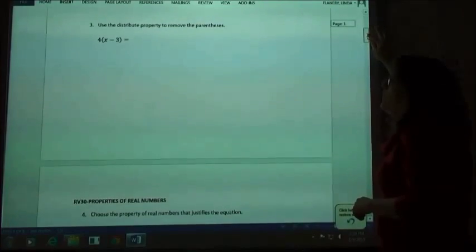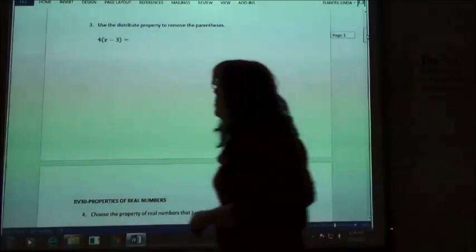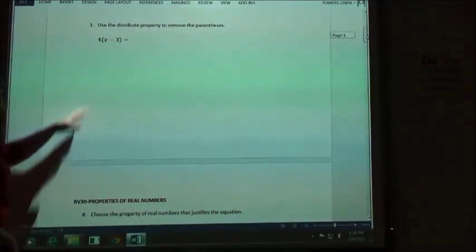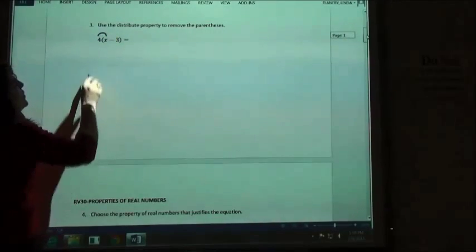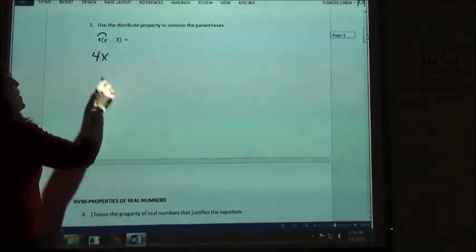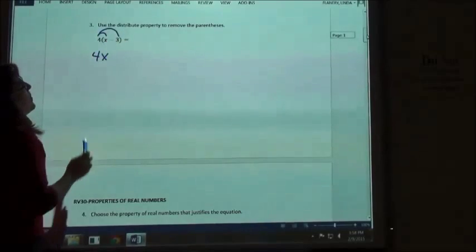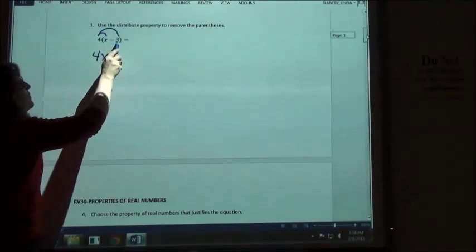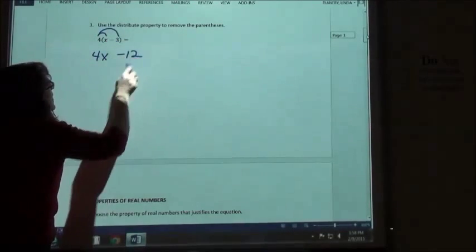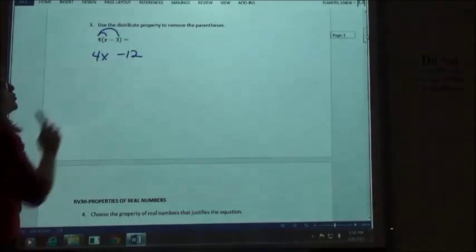So number 3, if I'm going to use the distributive property to remove the parentheses there, I'm going to do 4 times x. 4 times x is 4x. I'm also going to do the 4 times the minus 3. Positive times a negative is a negative, and so I have 4x minus 12.